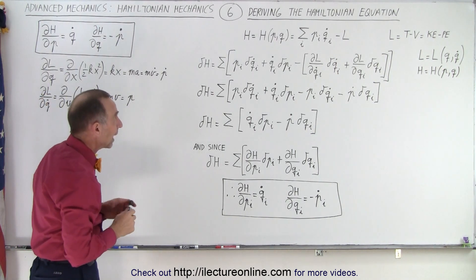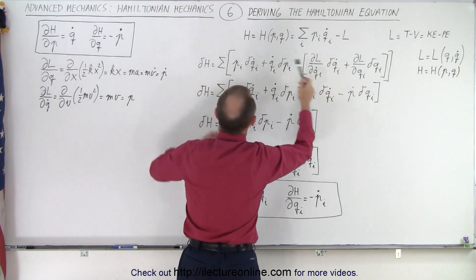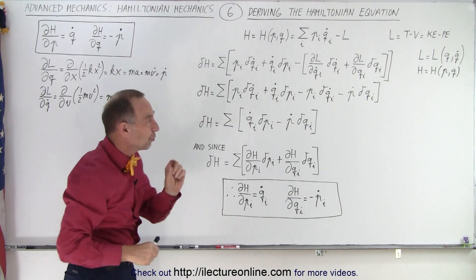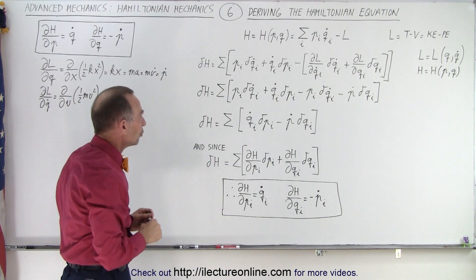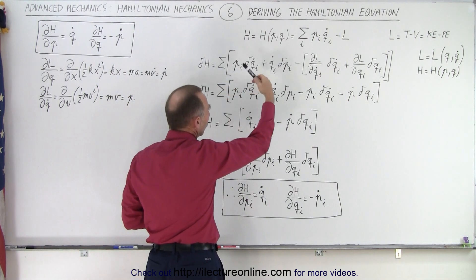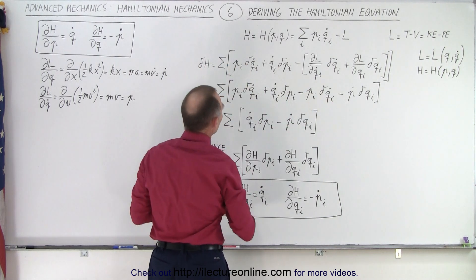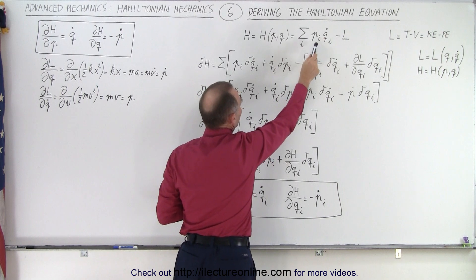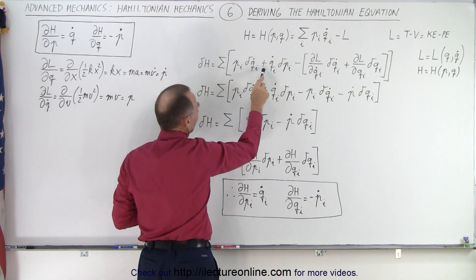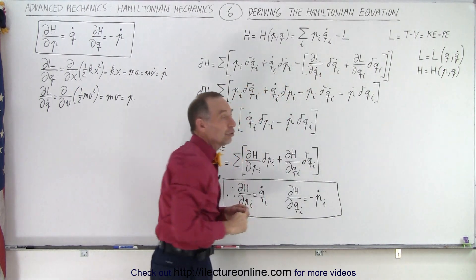Now let's go back to our basic equation. We're going to expand it by taking the differential of the Hamiltonian — what happens when there's a small change in the Hamiltonian. As long as we have more than one dimension, we'll have the summation sign over all the dimensions, and inside the brackets we have a product. So when we take the differential, we take the first times the differential of the second, plus the second times the differential of the first, minus the differential of the Lagrangian.